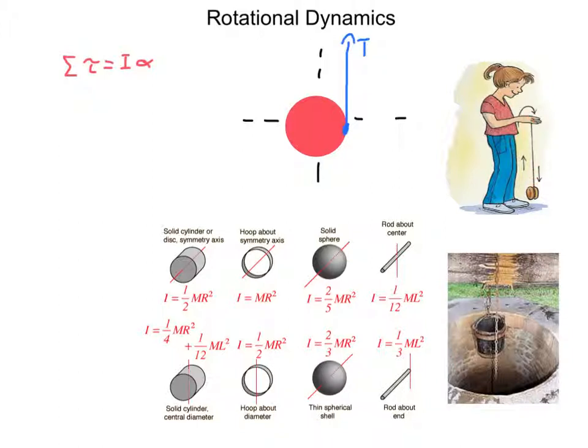Or if you drop a yo-yo, whenever you drop a yo-yo, it does not fall down at an acceleration, tangential acceleration, 9.81 meters per second squared. It's something slower than that, and the reason is because some of that energy goes into rotational energy. The yo-yo itself has rotational inertia, trying to prevent it from speeding up. So the force of gravity not only has to cause it to fall, but some of it has to go into causing it to rotate.